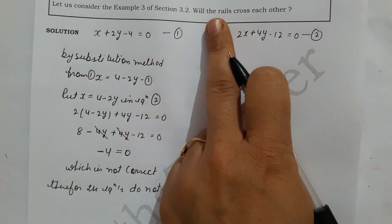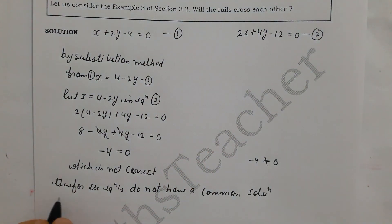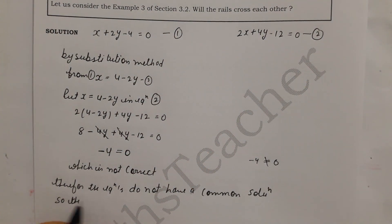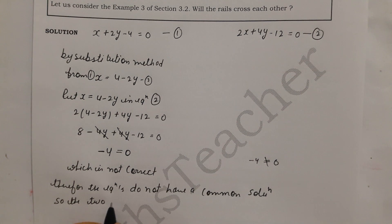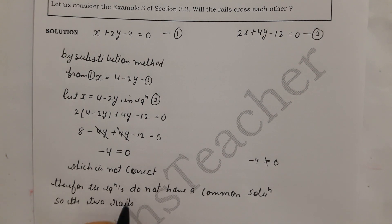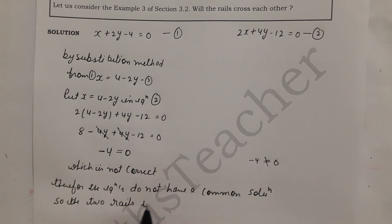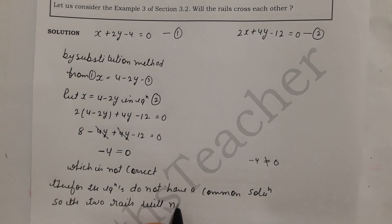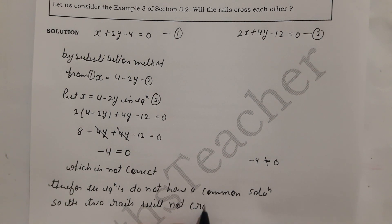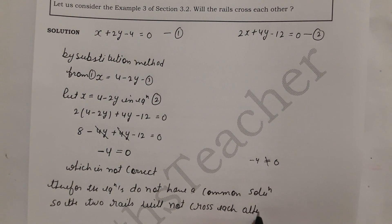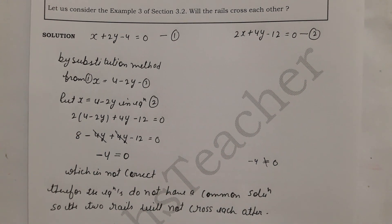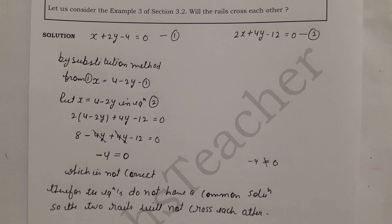So the final answer to the question 'will the rails cross each other?' is: the two rails will not cross each other. I hope you can see the difference between Example 9 and Example 10. If you have any doubts, please comment in the box. Thank you.